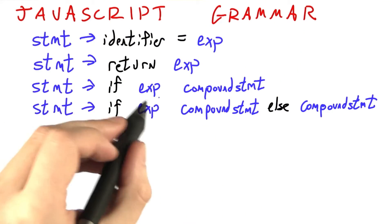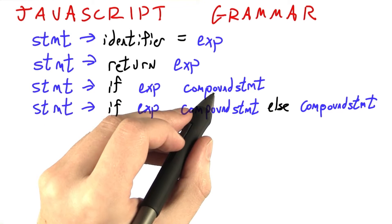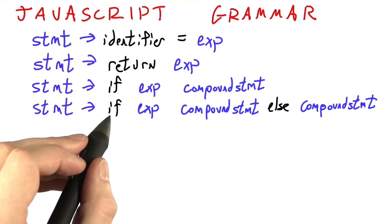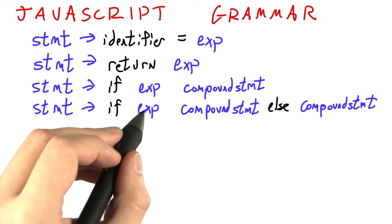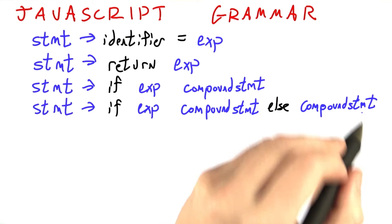The if statement checks to see if a certain expression is true, and if it's true, then we execute the then branch. There's also an if-then-else, if the expression is true, the then branch, else, the else branch.